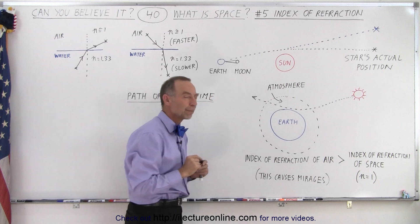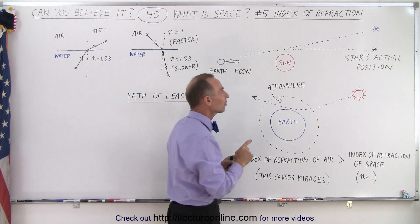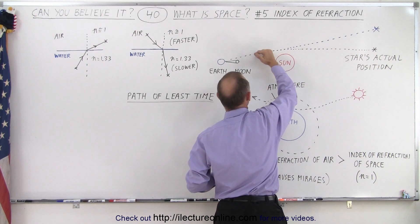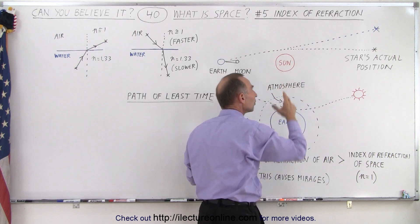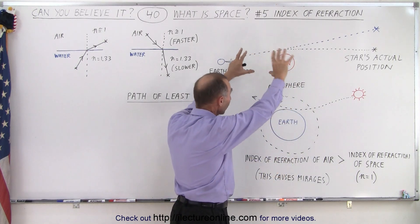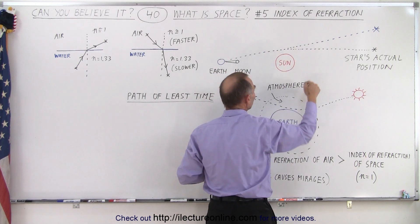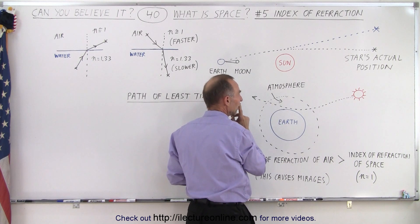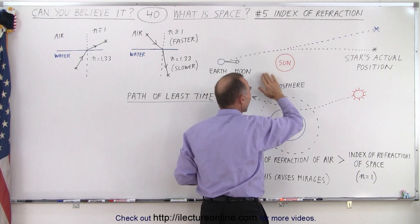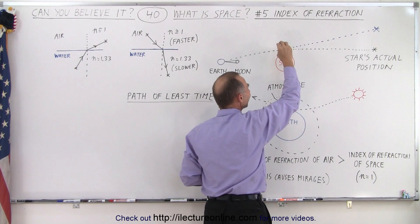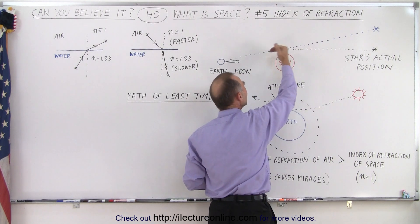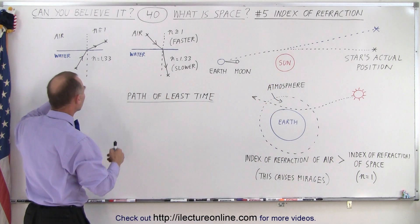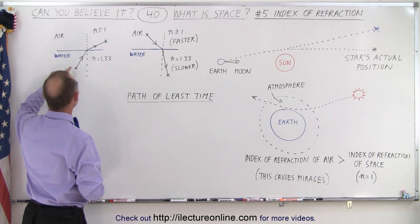Now when light comes from a star far away, it will bend around the sun because of what the sun is doing to the space around it. But notice the bending of light is in the opposite direction to what we see in the atmosphere. So it almost seems as if the index of refraction of space around the large object is less than one, causing the bend to go in this direction.